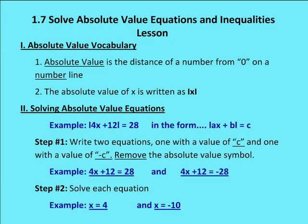Before we get started with absolute value equations and problems involving equations and inequalities, let's talk about absolute value vocabulary. Absolute value is just the distance of a number from zero on a number line. We can write the absolute value of x with two bars on either side of that value. If you have a negative value inside the absolute value sign, the absolute value of negative 5 is going to be 5. So any negative inside the absolute value symbols becomes a positive value, and all positive values remain positive.